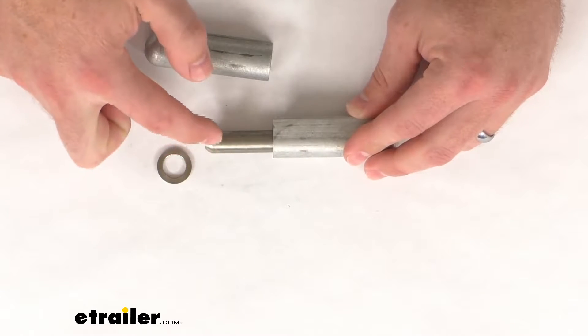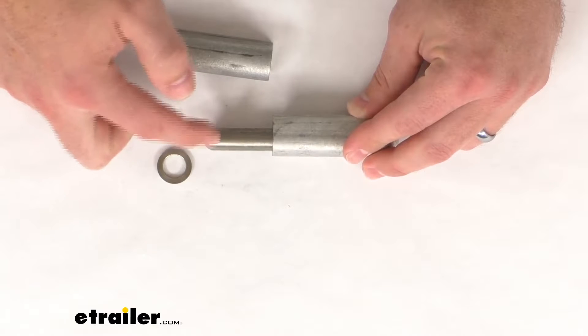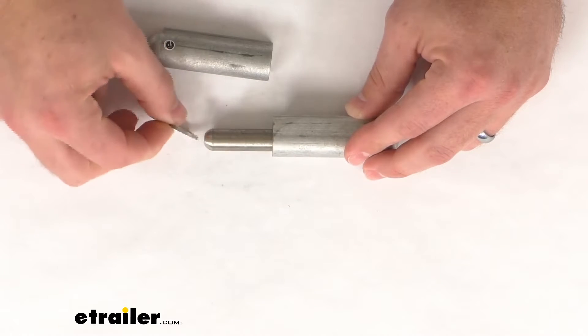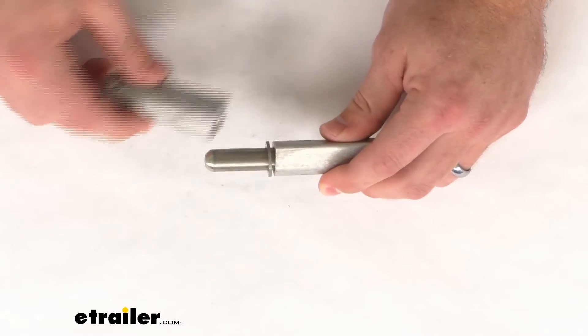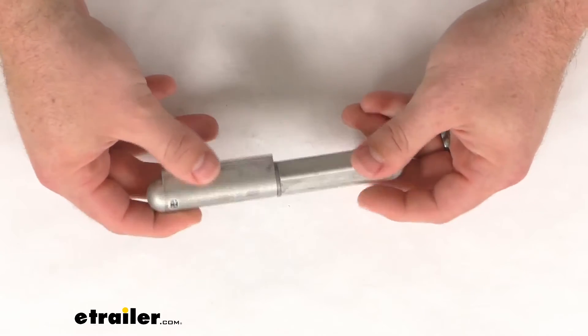Our pin here is a half inch or about 13 millimeters in diameter. And the pin and the bushing are both a stainless steel construction, so they are also going to be very corrosion-resistant. And that bushing is going to provide that nice smooth movement for our hinge.